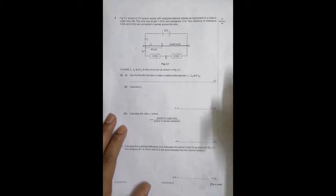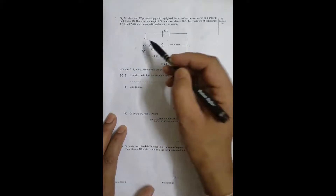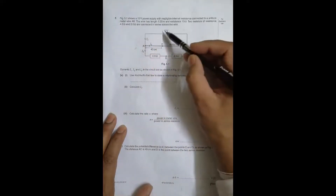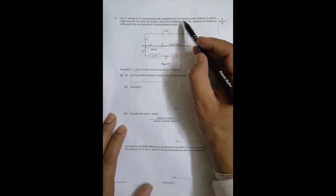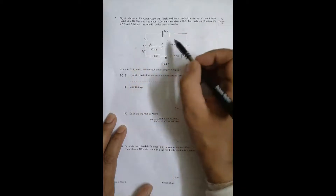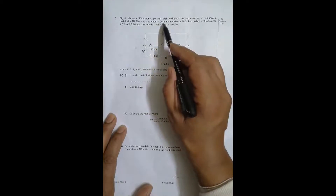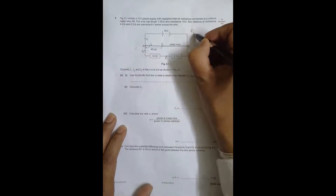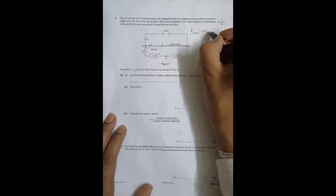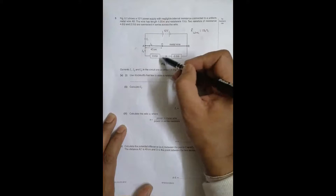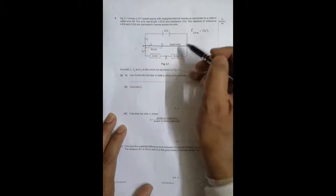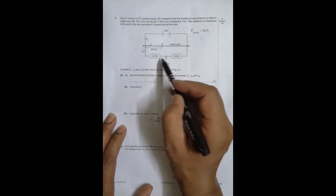This is the 2012 October/November Paper 22, Question 5, concerned with current electricity. Figure 5.1 shows a 12 volt power supply with negligible internal resistance connected to a uniform metal wire AB. The wire has a length of 1.00 meter (100 centimeters) and resistance 10 ohm. Two resistors of 4 ohm and 2 ohm are connected in series across the wire.